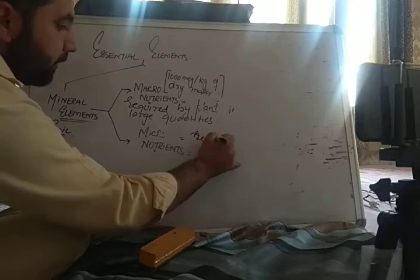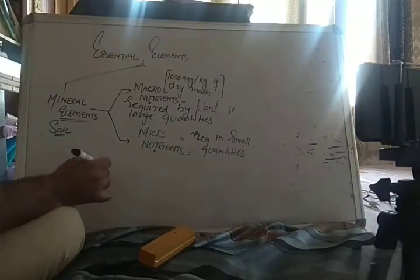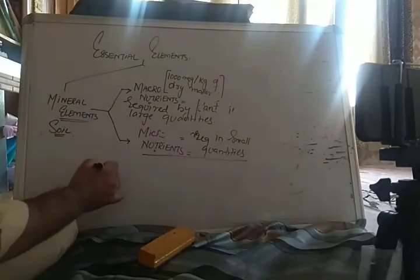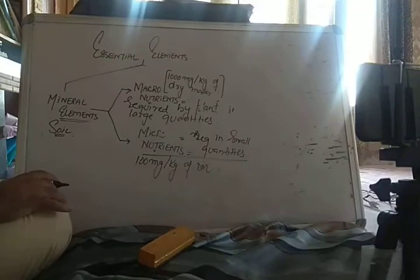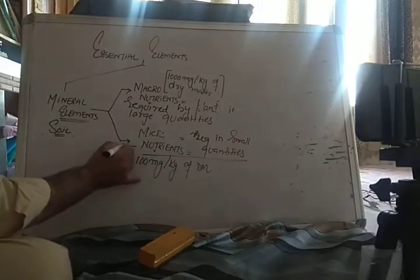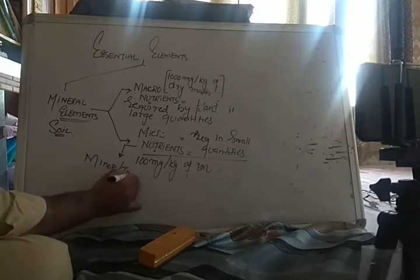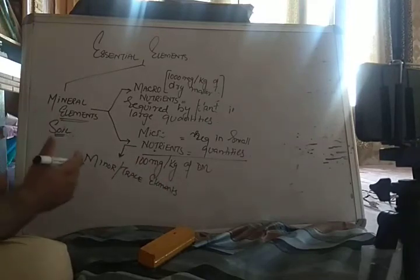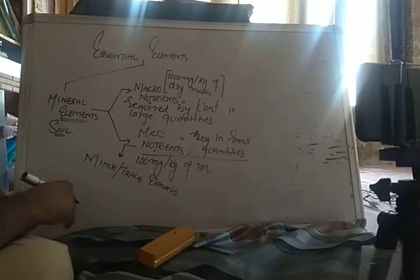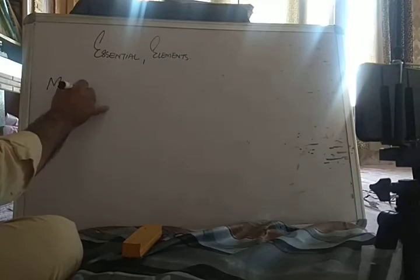Micronutrients are those nutrients required in small or minor quantities — less than 100 mg per kg of dry matter. They are also called minor elements or trace elements. So macronutrients are present or required in large quantities, while micronutrients are required by the plant in small quantities.